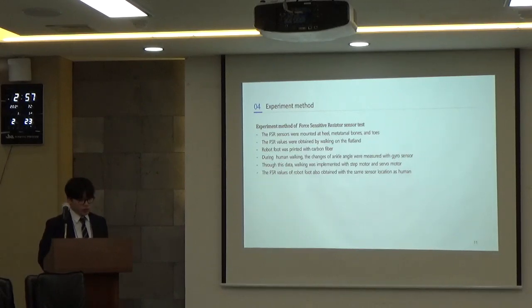The FSR sensor test was conducted to determine the similarity between robot foot walking and real human walking. Three FSR sensors were used in this test. The sensors were mounted at heel, metatarsal bones, and toes. The FSR sensor data were obtained by walking on flat land. During human walking, the changes of ankle angle were measured with gyrosensor. Through this data, walking was implemented with stepping motor and servo motor to replicate the push-off power. The FSR sensor values of robot foot were obtained with the same sensors during walking similar to human.